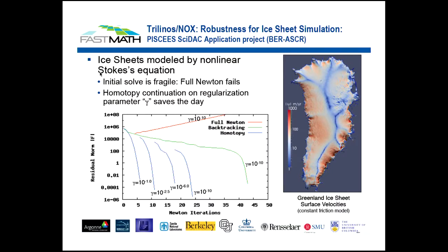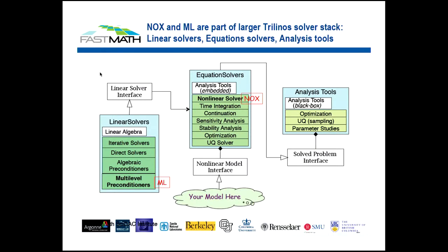There's a simple graph showing different convergence based on using, for example, regular Newton, which just fails, while using a backtracking Newton does converge. But using various homotopy methods that come with the algorithms and the software, you can get much faster convergence for very difficult problems. NOX and ML are part of Trilinos, which has a variety of linear solvers — iterative solvers, direct solvers, algebraic multigrid — and support for calling other packages like SuperLU. It also has built-in sensitivity analysis, stability analysis, optimization algorithms, and UQ capabilities. So if you want all these pieces together, Trilinos is a good place to find them.